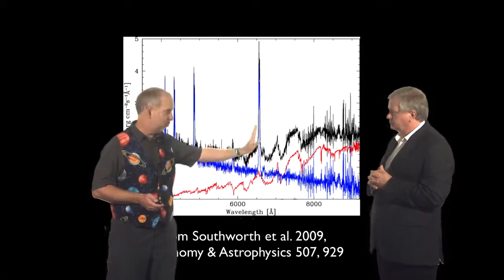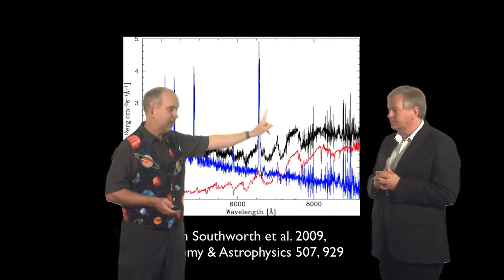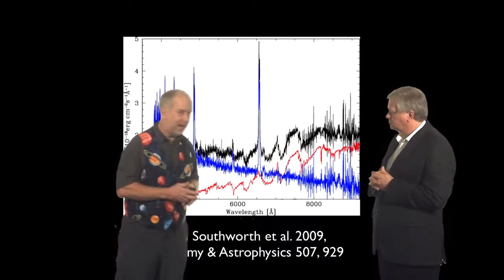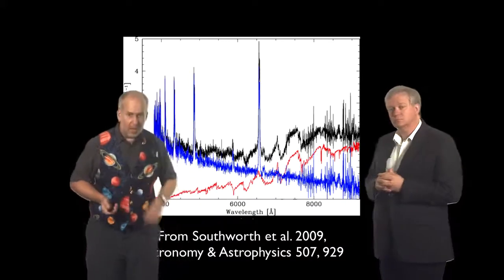If the gas is moving towards us, the wavelength would shift slightly to shorter wavelengths. If moving away, slightly to the red. Likewise, all these titanium dioxide absorption bands should shift slightly one side or the other. And you can plot that.